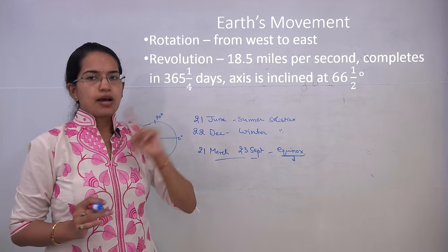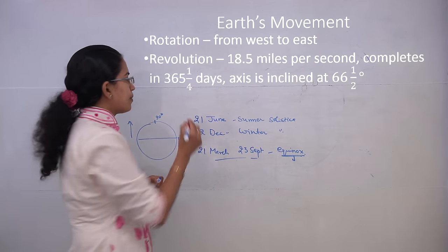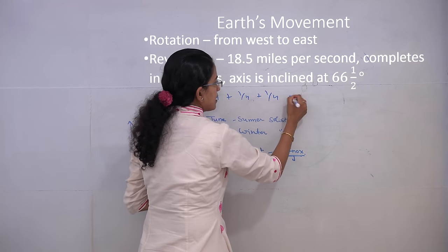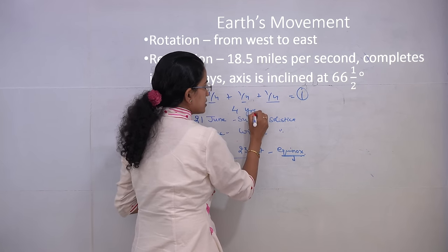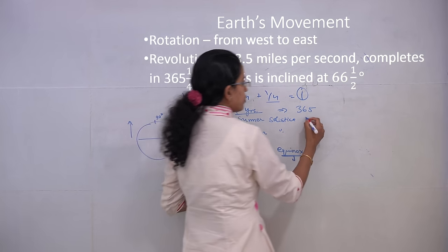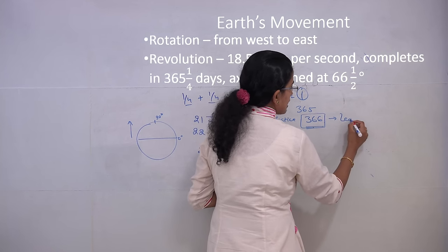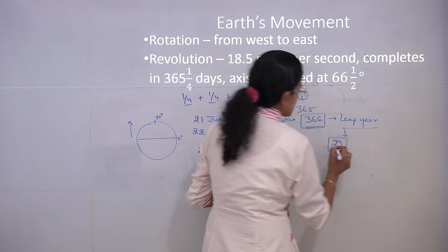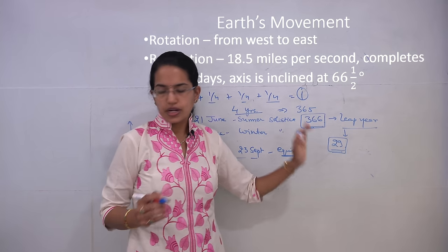One revolution is completed in 365 and one-quarter days. Adding one-quarter four times gives one full extra day, so every fourth year we add a day to the calendar. In routine we say 365 days, but every fourth year we have 366 days — called a leap year. This additional day is added to February, increasing it from 28 days to 29 days.